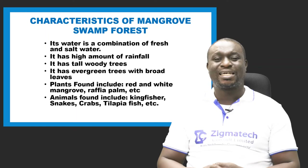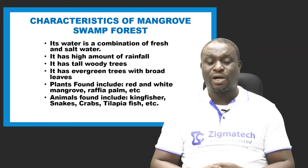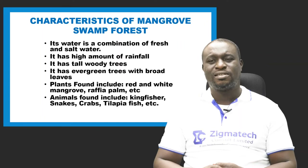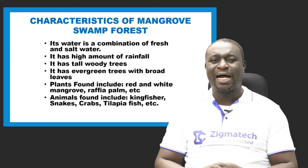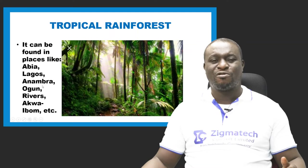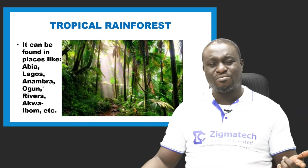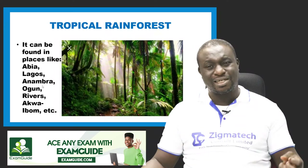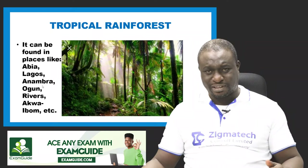Animals that can be found in the mangrove swamp forest include the kingfisher, crabs, snakes, the tilapia fish, and many others. The second type of forest zone is the tropical rainforest zone, which can be found in places like Abia State, Lagos State, Anambra State, Ogun State, Akwa Ibom State, and many other states.